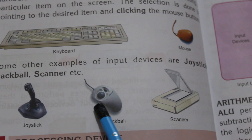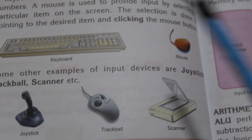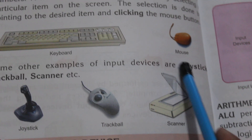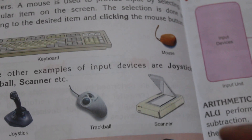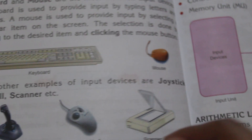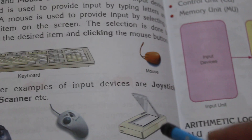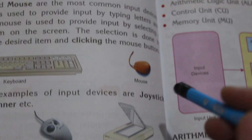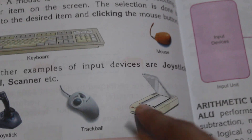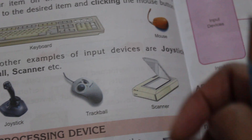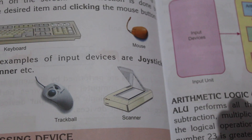A scanner takes an image of any printed or handwritten page as input — it can scan any page. It takes the input and then gives us output. Other examples of input devices include joystick, trackball, and scanner. A joystick is used in video games and is a control device.